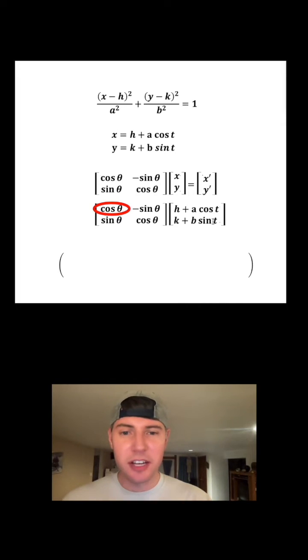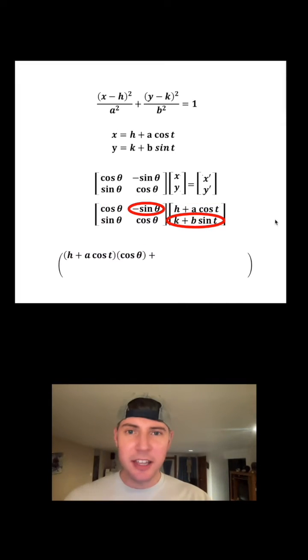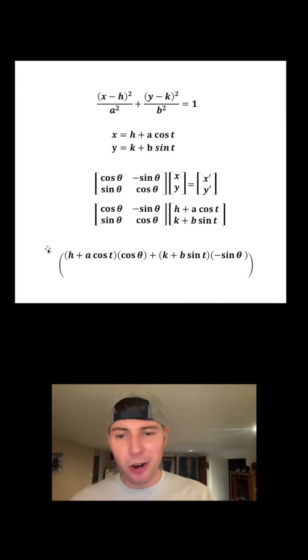Now we're going to do this matrix multiplication. You take this times this, and it goes right here. And then you add to it this times this, and that's going to go right here. And that is our x prime value, all of this stuff right here.